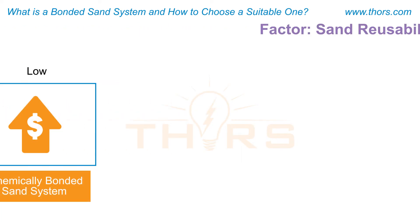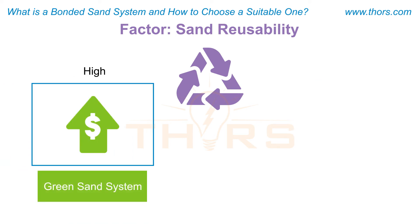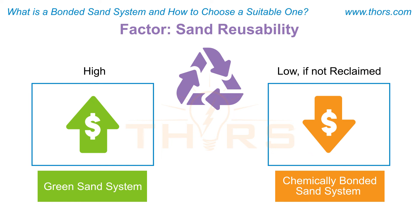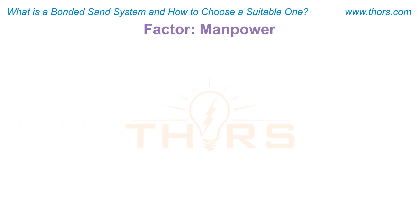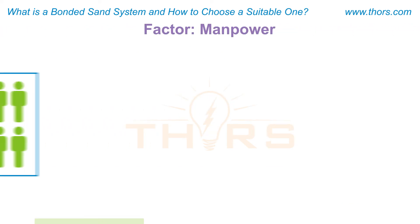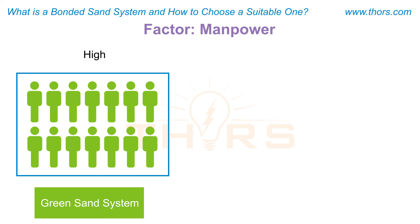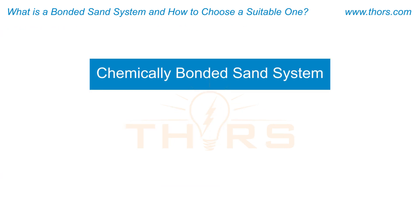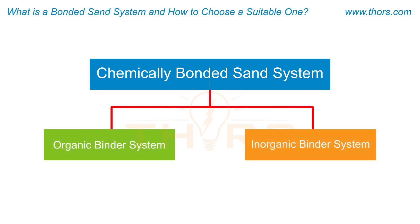The seventh factor is sand reusability. The reusability of sand in a green sand system is high, and typically 95 percent of it can be recycled. The reusability of sand in a chemically bonded sand system depends on the binder chemistry — as low as zero percent when no reclamation system is available, and as high as 95 percent when a reclamation system is available. The manpower required for a green sand system is high and lower for a chemically bonded sand system. Based on the binder used, a chemically bonded sand system can be further classified as an organic binder system or an inorganic binder system.